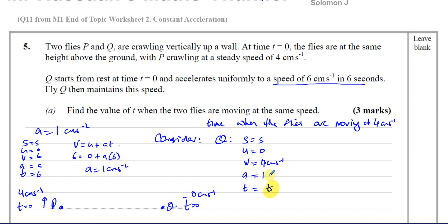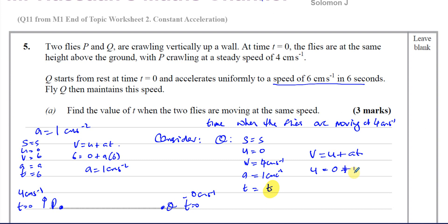We know A is 1. We're not concerned about when its velocity is 6 — we already know the time for that. We're trying to find the time for its velocity to become 4. So using V = U + AT: V is 4, U is 0, A is 1, and we want to find T. So T equals 4 seconds.